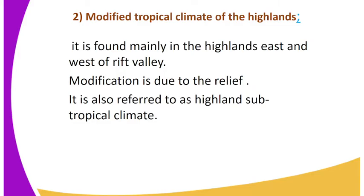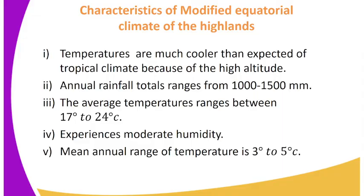The second climatic region: modified tropical climate of the highlands. It is found mainly in the highlands east and west of the Rift Valley. Modification is due to the relief. It is also referred to as highland subtropical climate. Characteristics: 1. Temperatures are much cooler than expected of tropical climate because of the high altitude. 2. Annual rainfall total ranges from 1,000 to 1,500 mm. 3. Average temperature ranges between 17°C to 24°C. 4. Experiences moderate humidity. The mean annual range of temperatures is 3 to 5 degrees centigrade.